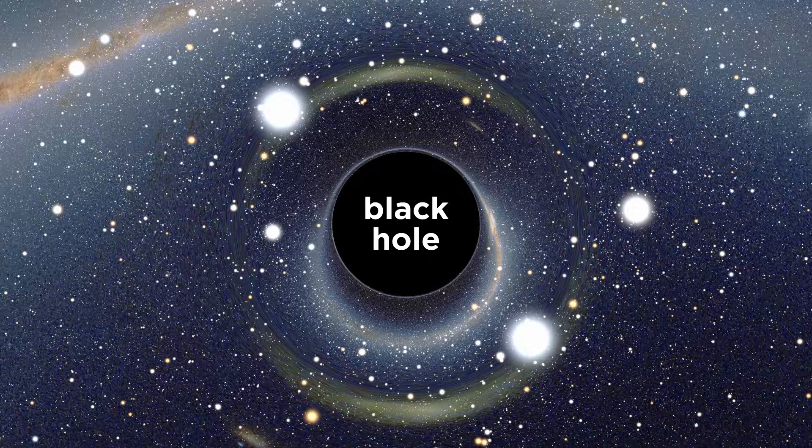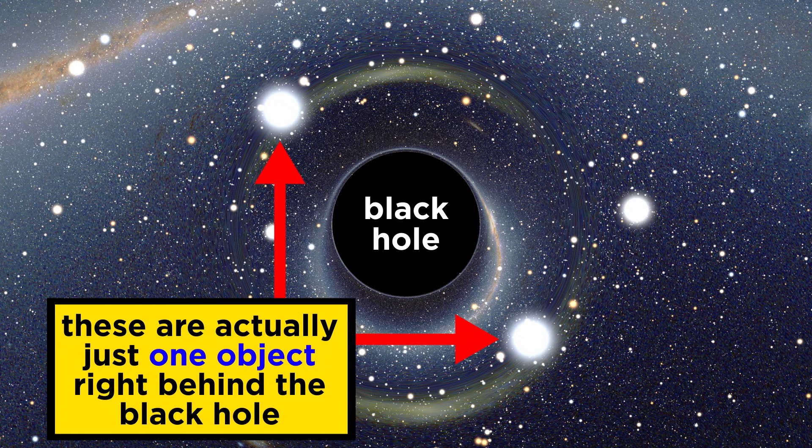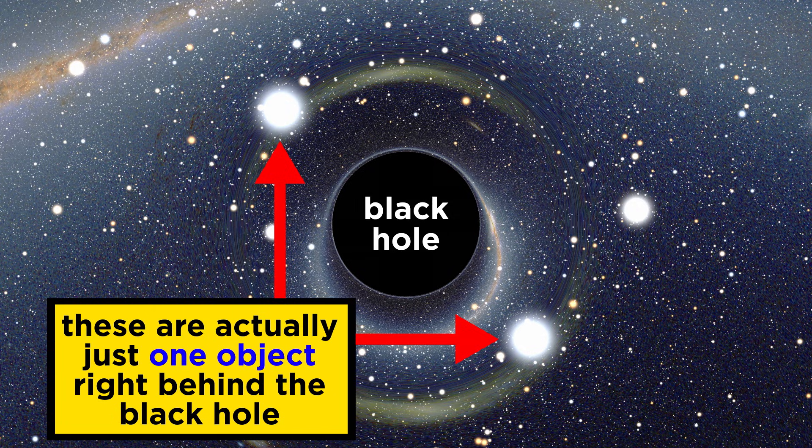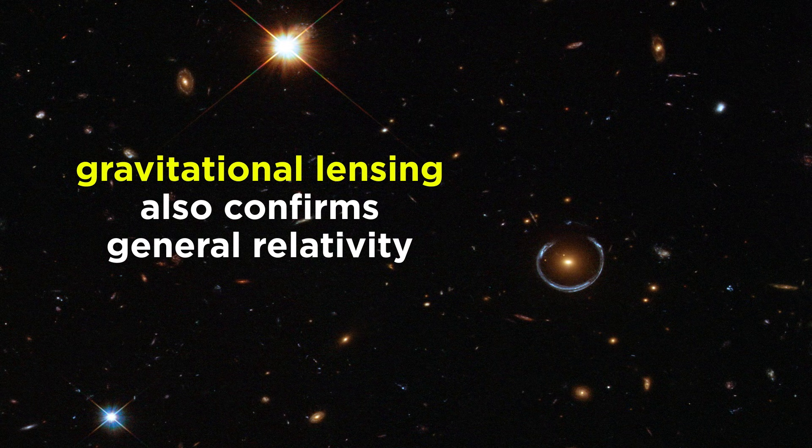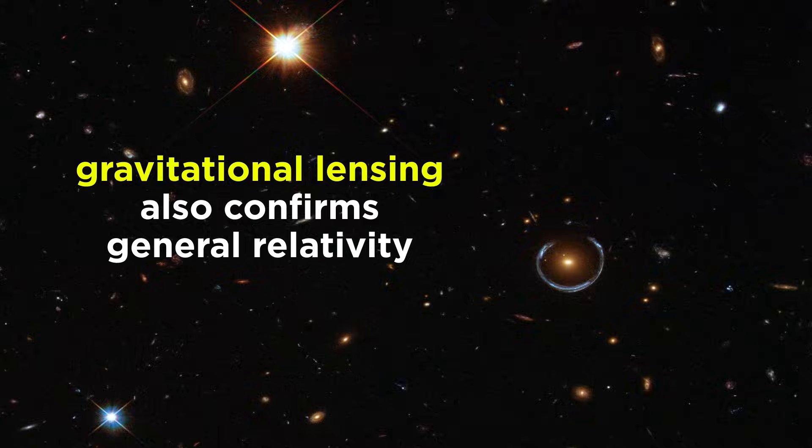When light is deflected around more compact objects like black holes, the light from the more distant object can bend around the mass in a way that results in multiple images of the object. This phenomenon is called gravitational lensing, and it is a common astronomical observation.